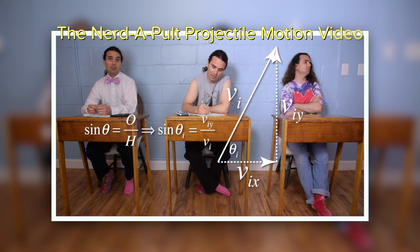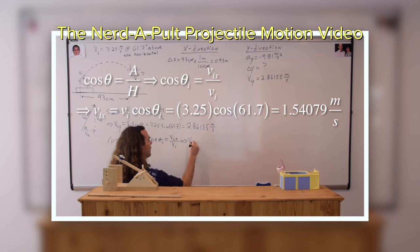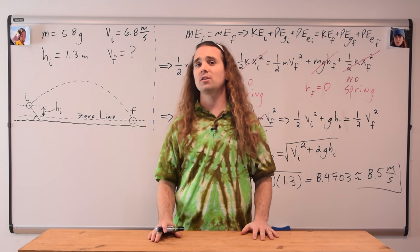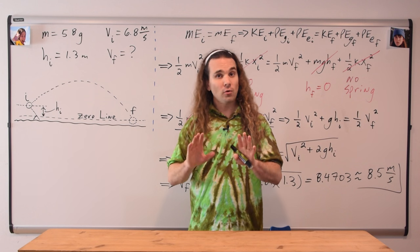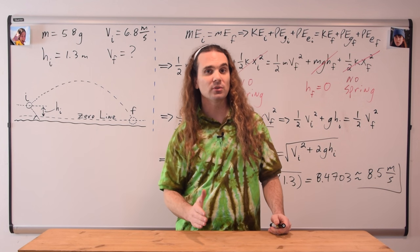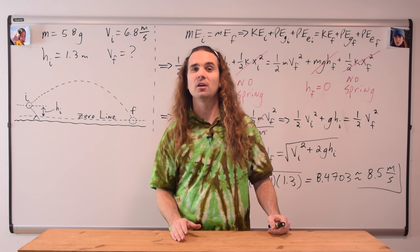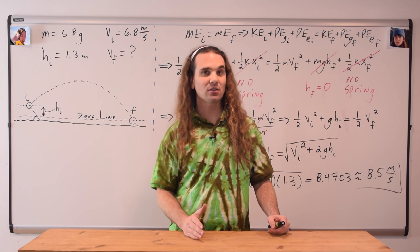Mr. P, why didn't we use projectile motion to solve this problem? It does look like a projectile motion problem that we would solve by breaking the initial velocity into its components and listing what we know in the x and y directions. However, we actually cannot solve this problem using the projectile motion equations. We only know the initial speed, not the initial velocity — we don't have the direction for the initial speed, so we can't break it into its components. Therefore we cannot use projectile motion. We can, however, use conservation of mechanical energy because energy is a scalar and therefore does not have direction.